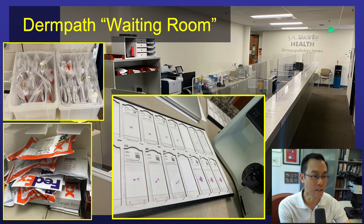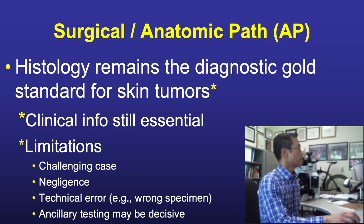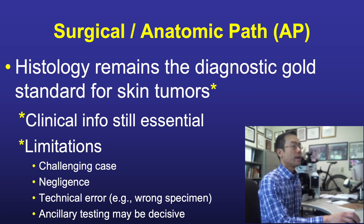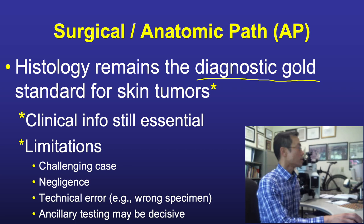Slides magically appear in trays on our desks, and we subsequently view these alongside trainees in many cases, then issue a diagnosis in the form of a pathology report. In rendering a diagnosis on case after case, pathologists wield great responsibility and power — that is par for the course in traditional surgical or anatomic pathology, where histology is the diagnostic gold standard for most tumors including skin tumors. Clinical correlation is still essential, and with any technique there are limitations.